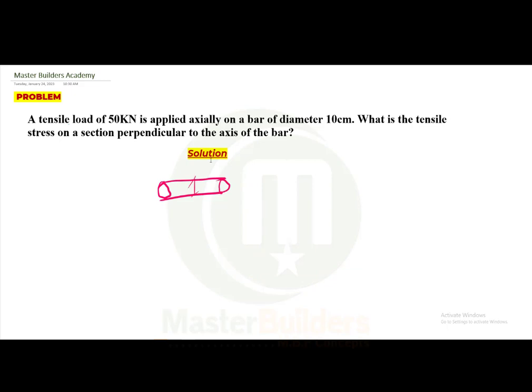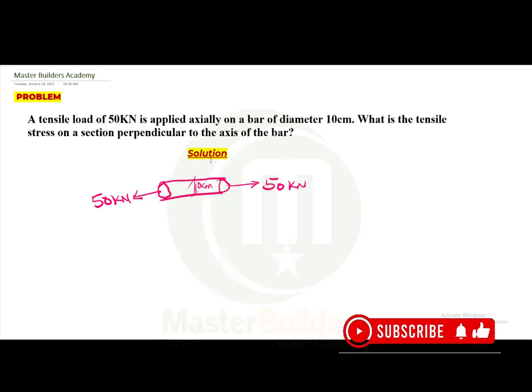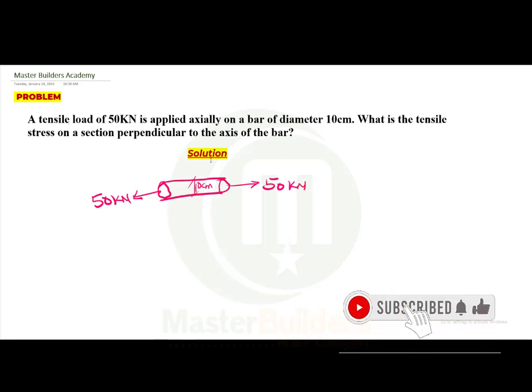Now we have tensile forces of 50 kilonewtons here and 50 kilonewtons there. So the question is: if this bar is subjected to this force having a diameter of this, what will be the stress induced on this section?